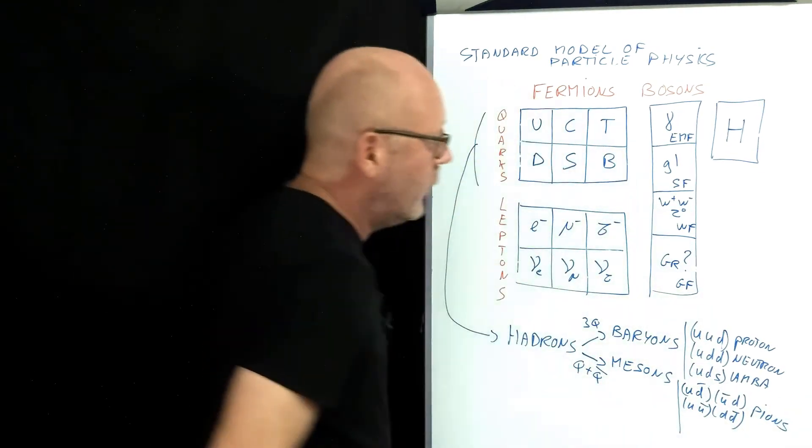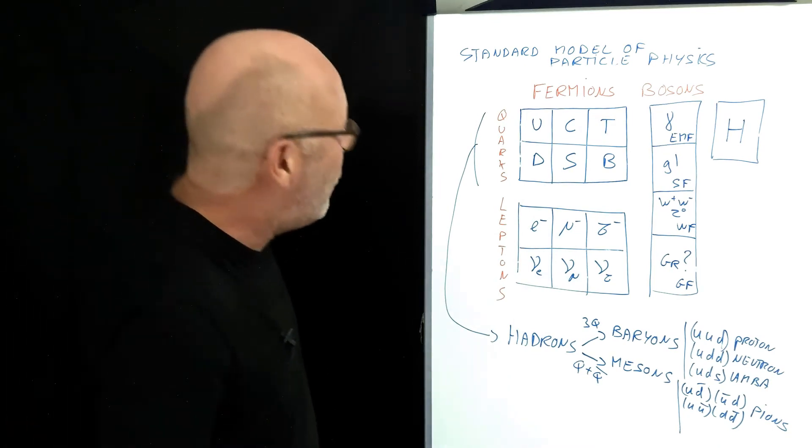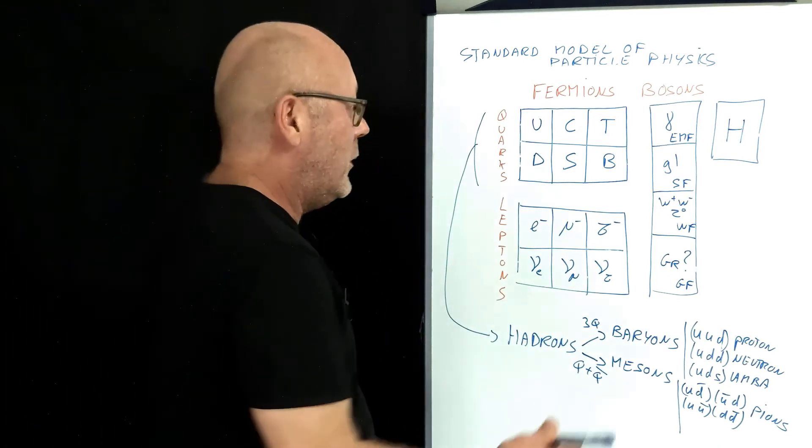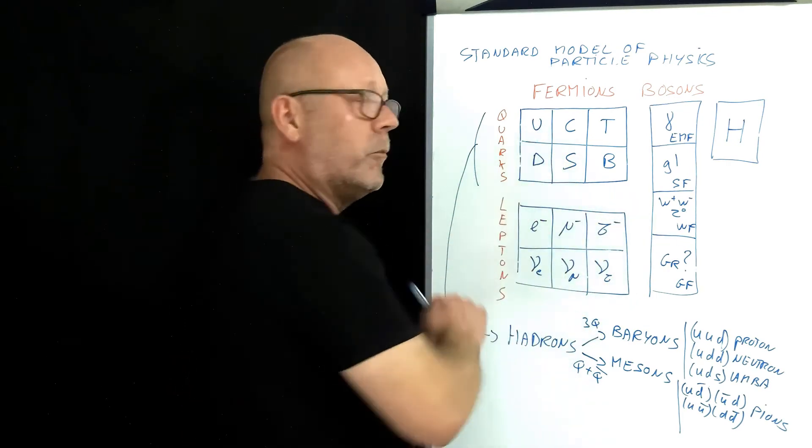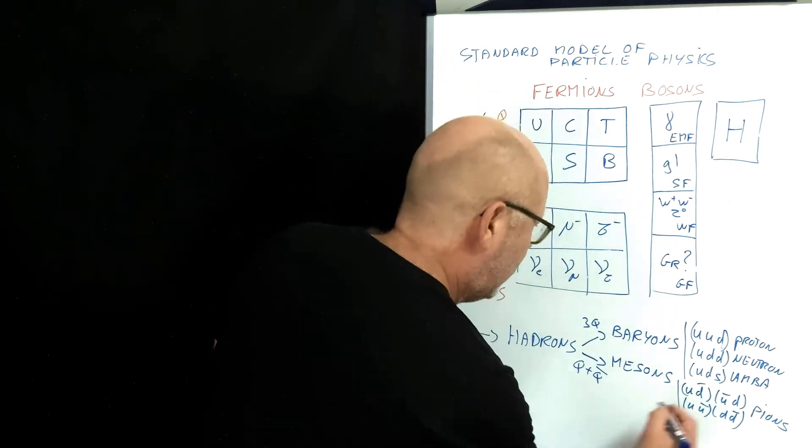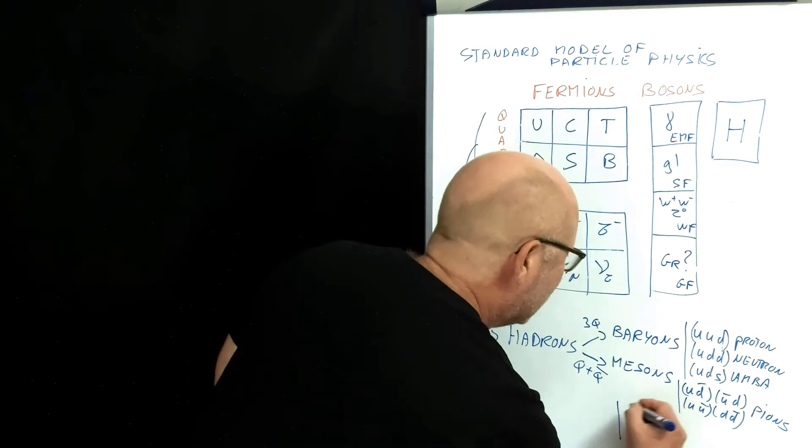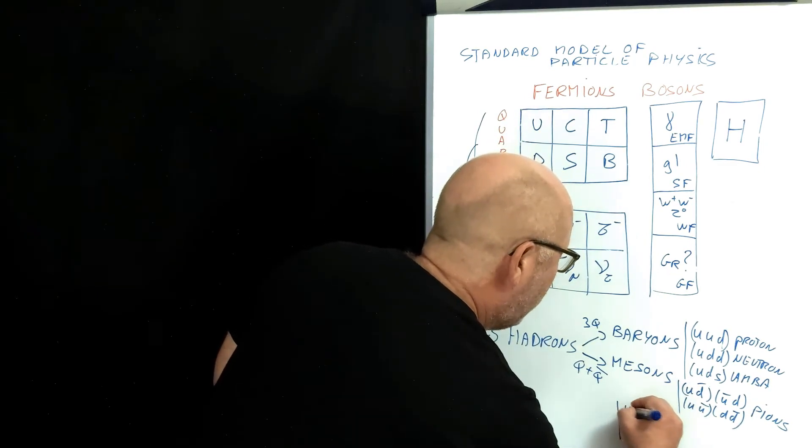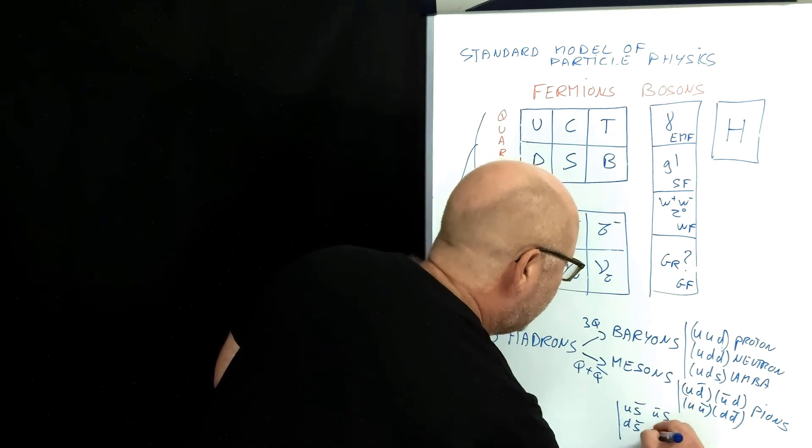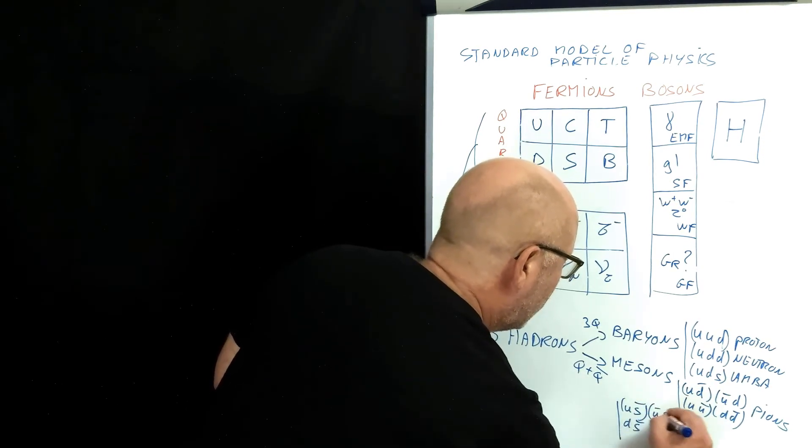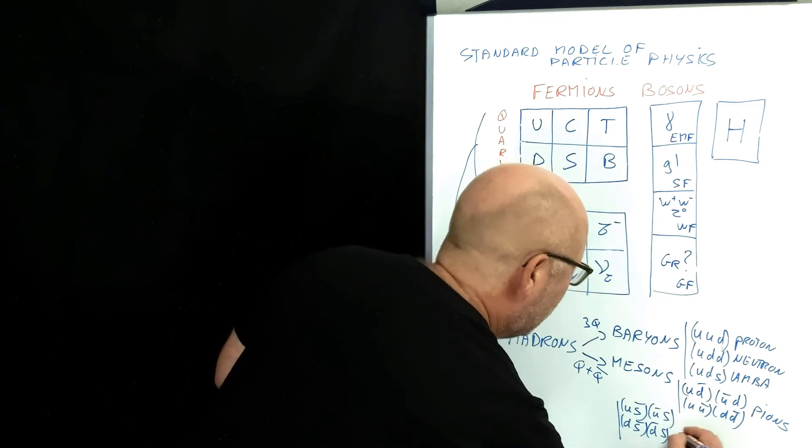We've got four types. We can also get kaons. Kaons are mesons which contain a strange quark and either an up or down. So, let's put it here because I can't write. We've got here the up anti-strange, the anti-up strange, the down anti-strange and the anti-down strange. These are kaons.